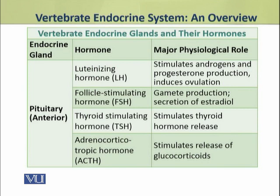Dear students, the anterior pituitary gland produces four types of tropic hormones and three other hormones which are non-tropic in action. Tropic hormones are those which act on other endocrine glands and cause them to produce their own hormones, while non-tropic hormones act directly on tissues and produce their effects. The anterior lobe produces four tropic hormones. These include the luteinizing hormone, which acts on the gonads, especially the ovaries, and follicle stimulating hormone, which also acts on the gonads and causes them to produce the male and female sex hormones.